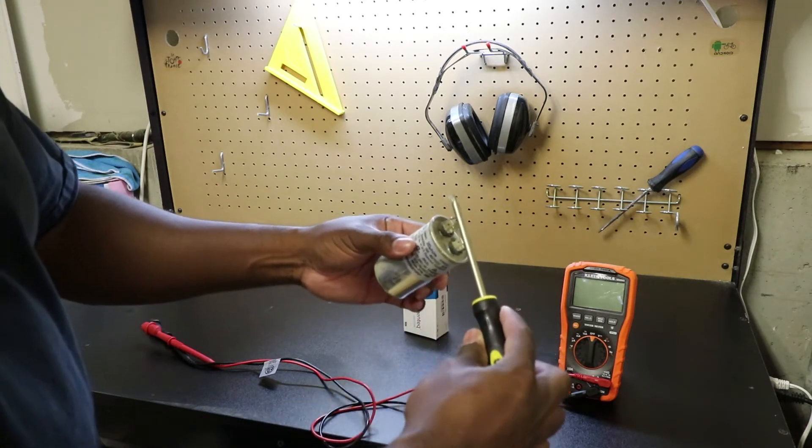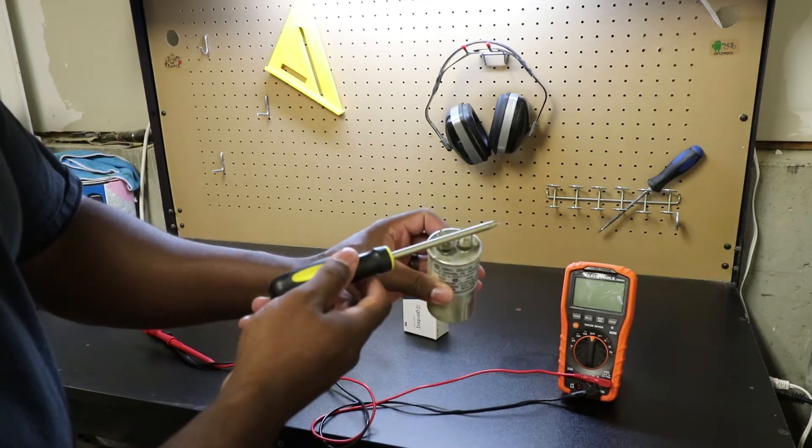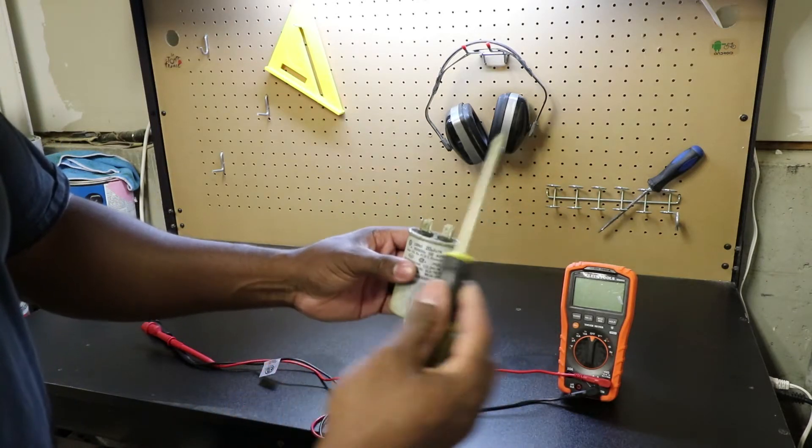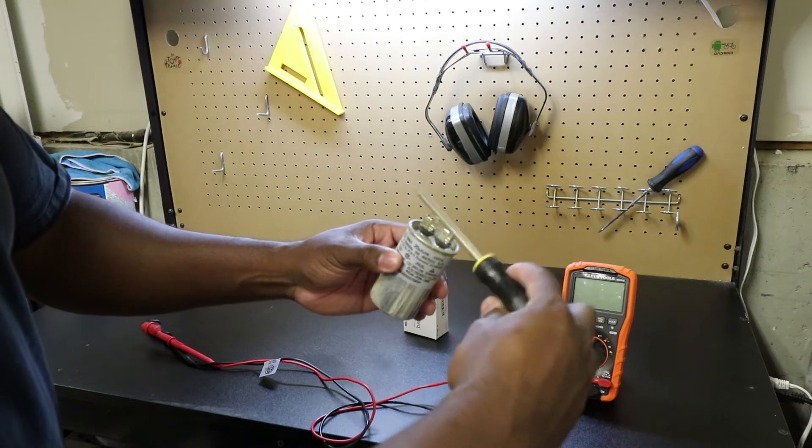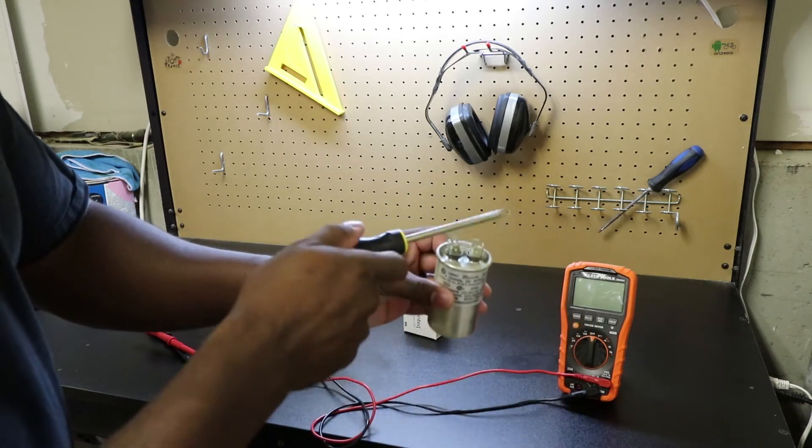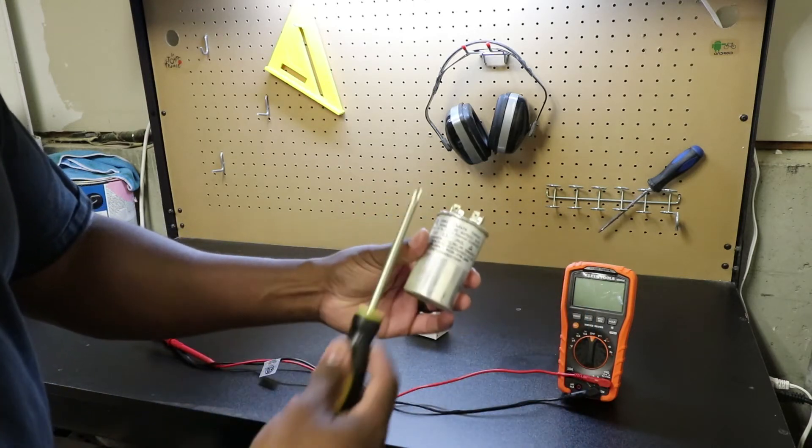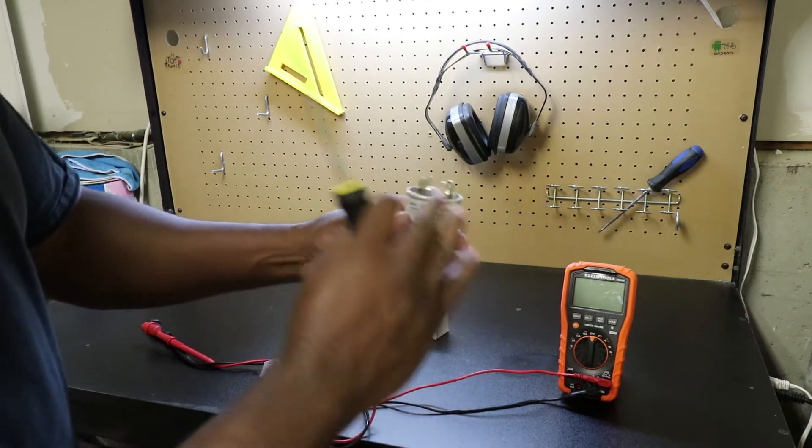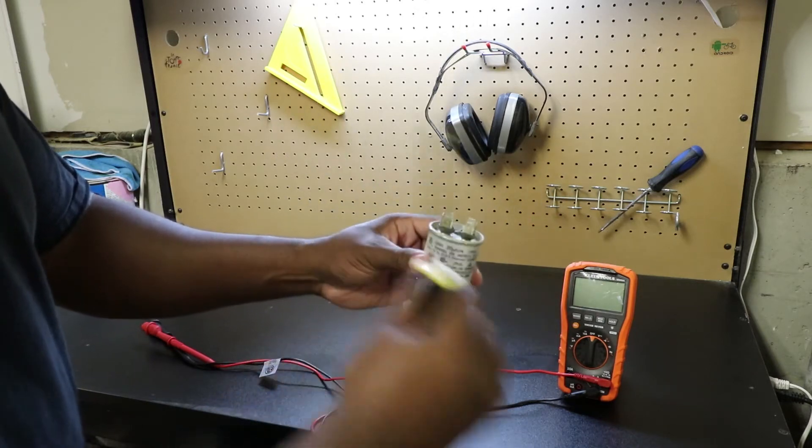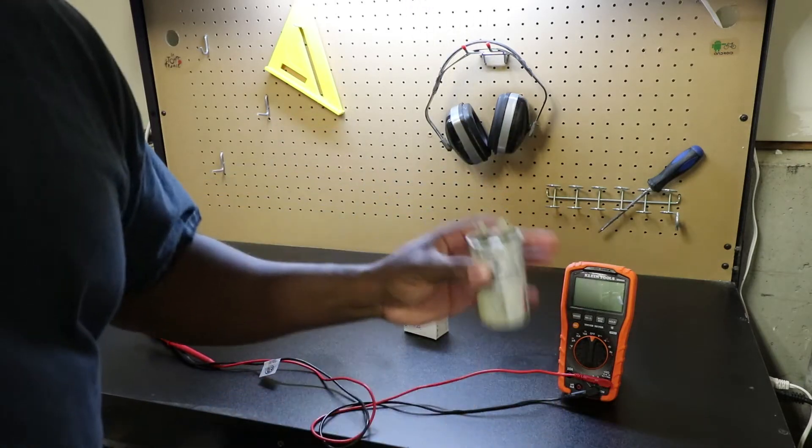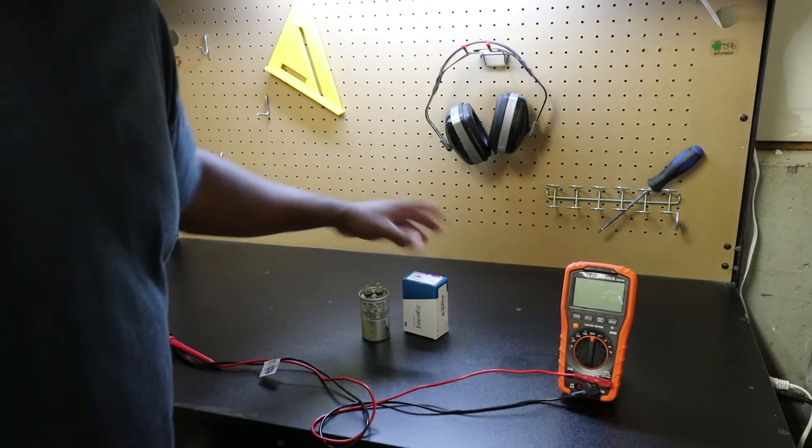You want to discharge it by putting a screwdriver or something with an insulated handle across these prongs, just like this. Make sure you discharge the power because these are a lot like batteries—they can hold power. If you touch them, it gives you a good zap, potentially stopping your heart. That would not be a good day because you're dead.